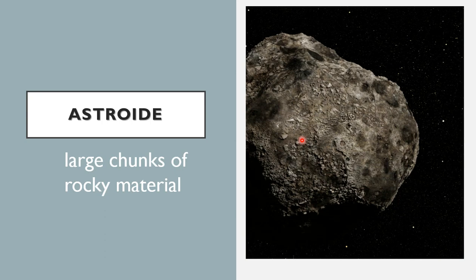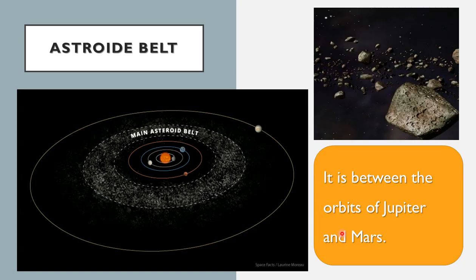The second celestial body is the asteroid. An asteroid is a large chunk of rocky material flying in space. The asteroid belt is full of asteroids of different sizes and shapes, and it is called a belt because it takes the shape of a belt, located between the orbits of Jupiter and Mars.